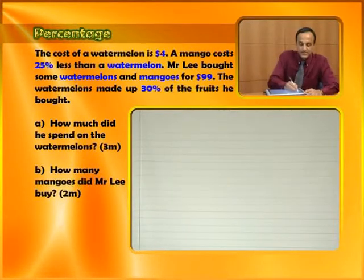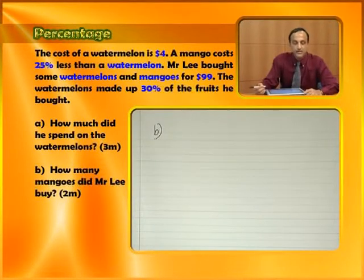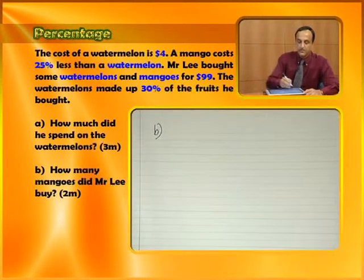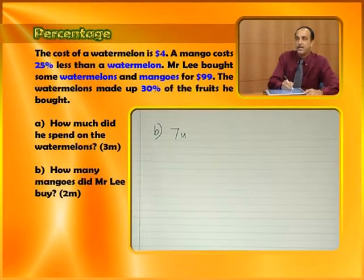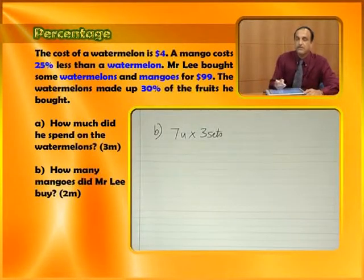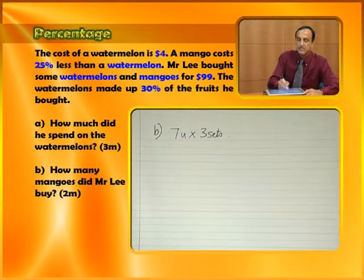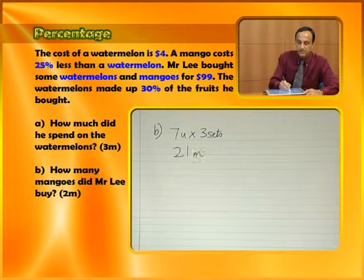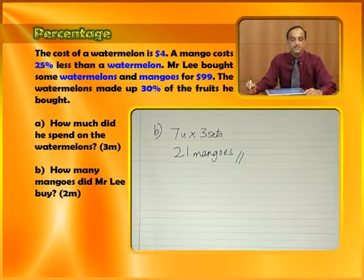Let's look at 3B: how many mangoes did Mr. Lee buy? We know that we had seven units of mangoes and three sets of mangoes. So seven times three is twenty-one. We had twenty-one mangoes, and that's the answer for B.